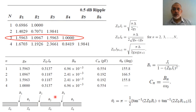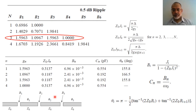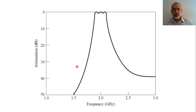This is an example of a capacitively coupled series resonator bandpass filter. The simulated response for this design shows omega_0 equal to 2 GHz and a bandwidth of 10% as required, with 0.5 dB ripple.